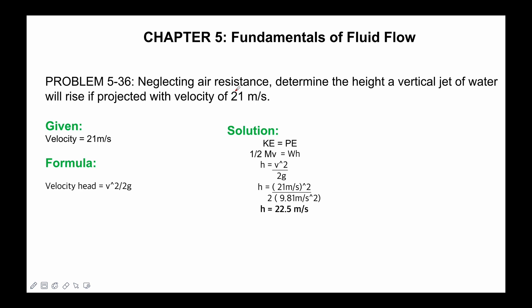Neglecting air resistance, determine the height a vertical jet of water will rise if projected with velocity of 21 meters per second. We have the given velocity equals 21 meters per second.